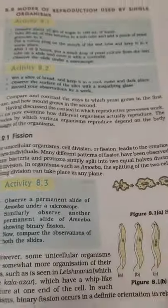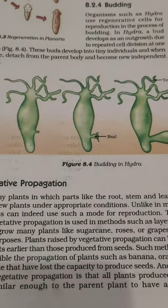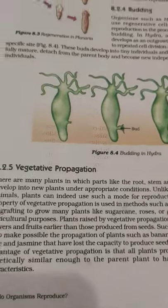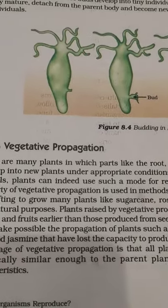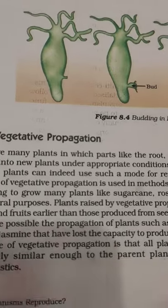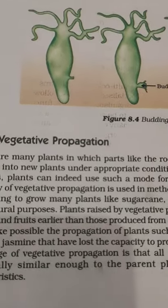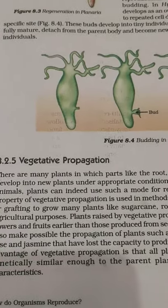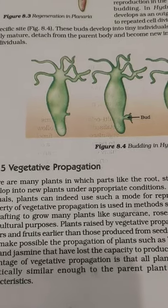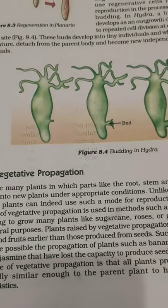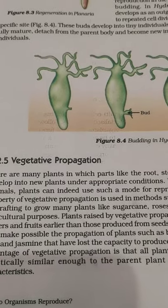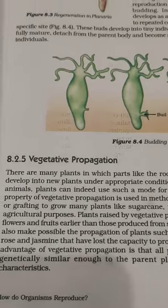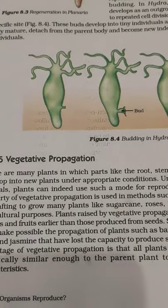Vegetative propagation takes place in higher organisms, specifically plants. Any plant that can reproduce without sexual reproduction can produce new plants by this mode. In vegetative propagation, a new plant is obtained from any part of the plant — it can be stem, root, or leaves — without the help of any reproductive organs.